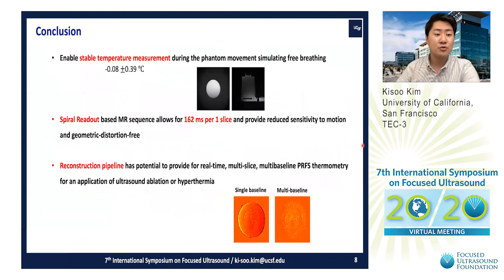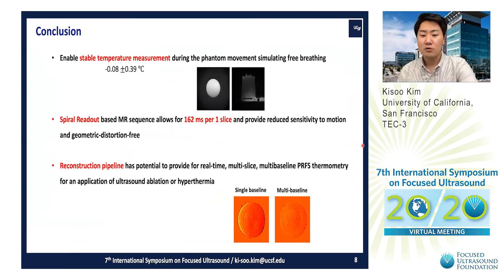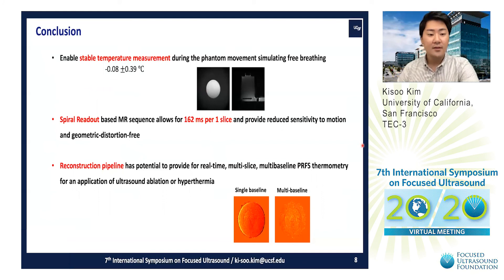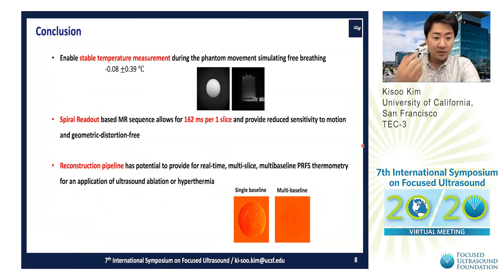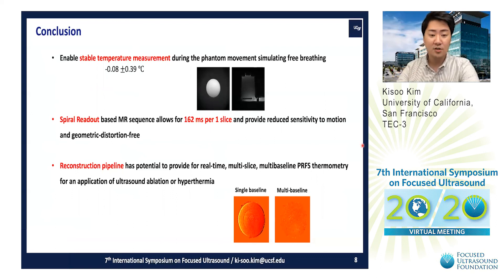In conclusion, our approach enabled stable temperature measurement during phantom movement simulating free breathing. The spiral readout-based MR sequence allows for good temporal resolution of around 162 milliseconds per slice and provides reduced sensitivity to motion and geometric-distortion-free imaging. This preliminary study shows that the reconstruction pipeline has potential to provide real-time multi-slice, multi-baseline PRFS thermometry. Our future work will focus on in vivo validation with this reconstruction pipeline.